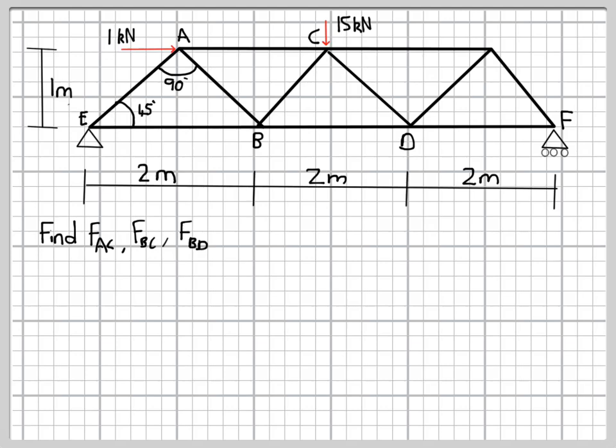We could, of course, do this using the method of joints, as in the previous example, but that would be quite a lot of work because we'd have to work from, say, joint E and then A and then B, and we'd find out forces in members which we weren't interested in.